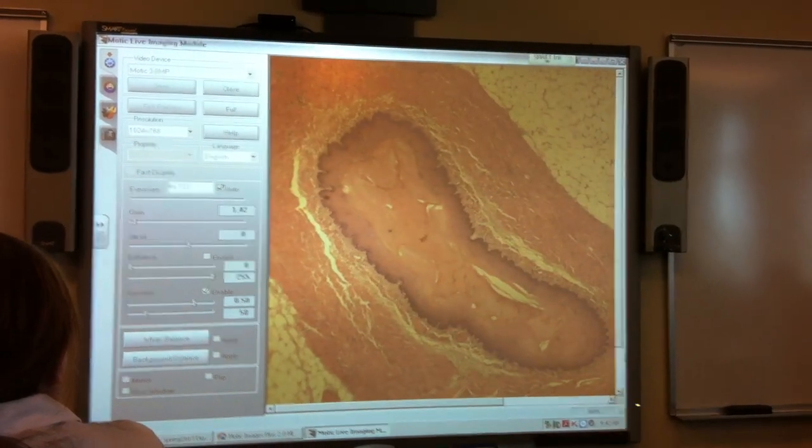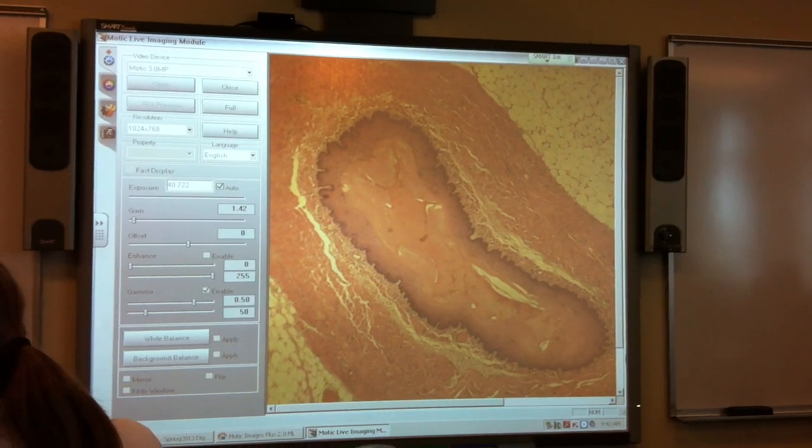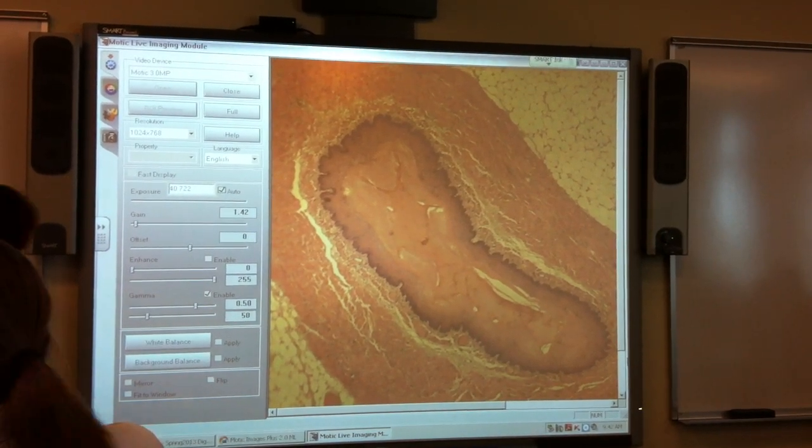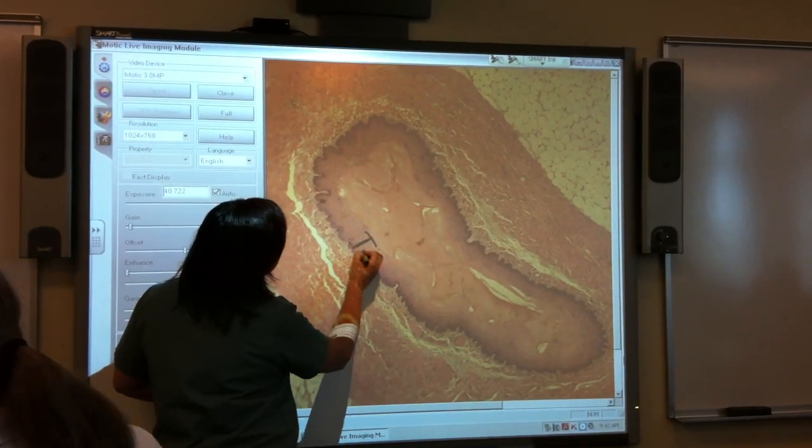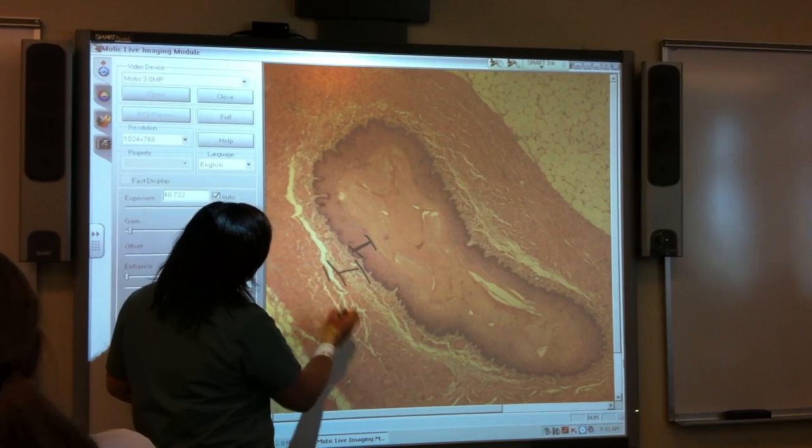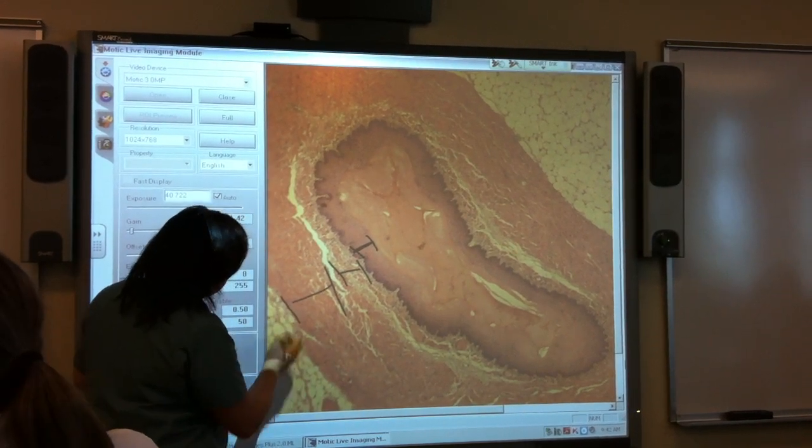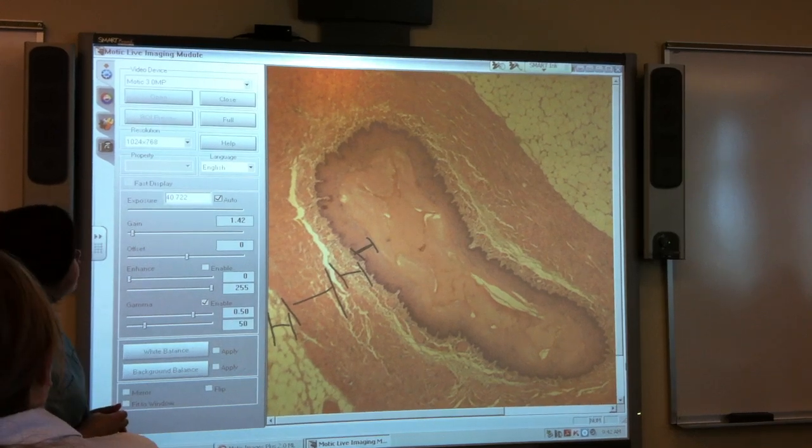And we have the esophagus. Layers. Smooth muscle, stratified squamous, and lumen. Yep. We've got our stratified squamous layer here. Submucosa here. Muscularis externa here. And then the serosa on the outside.